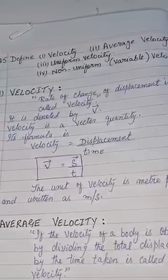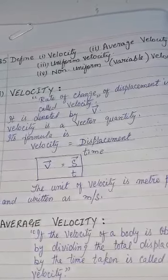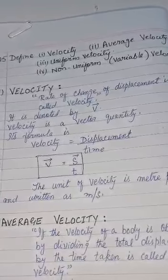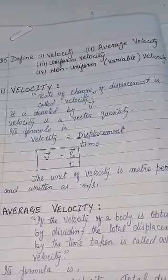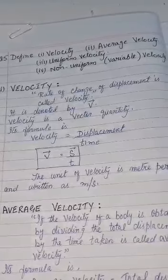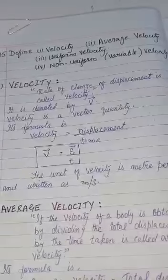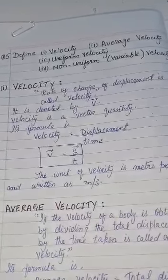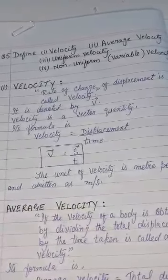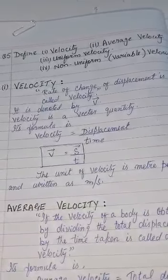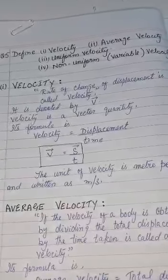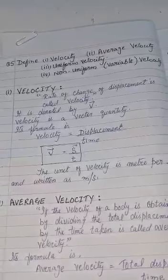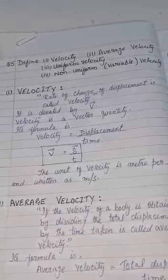Question number 5: Define velocity, average velocity, uniform velocity, and non-uniform variable velocity. First heading: Velocity. The rate of change of displacement is called velocity. It is denoted by v (vector). Velocity is a vector quantity. Its formula is: velocity = displacement / time, i.e., v⃗ = s⃗ / t. The unit of velocity is meter per second, written as m/s.